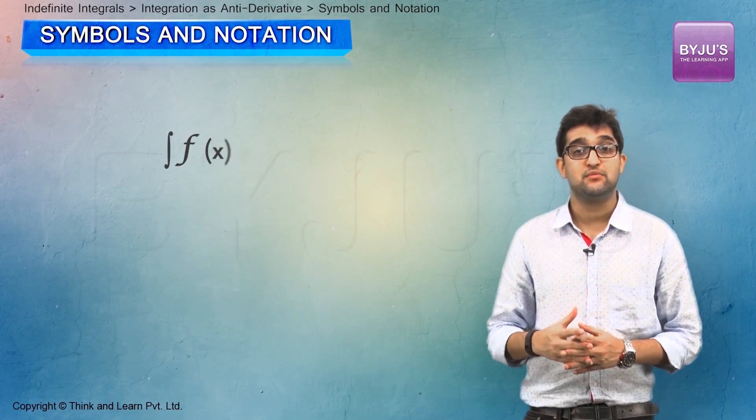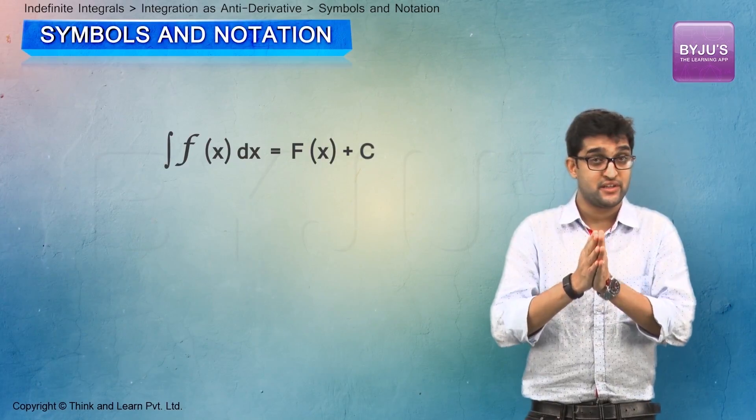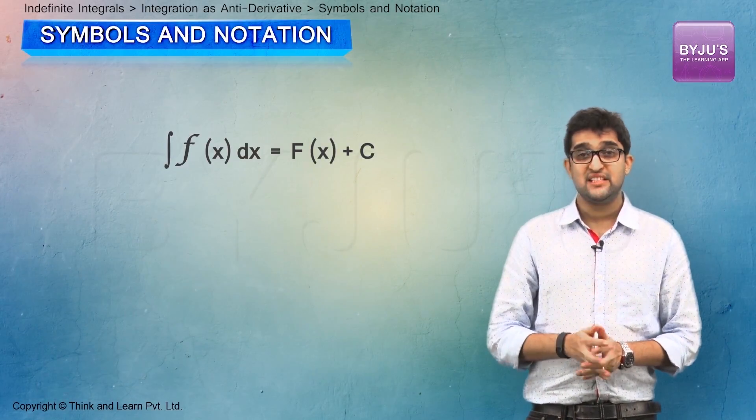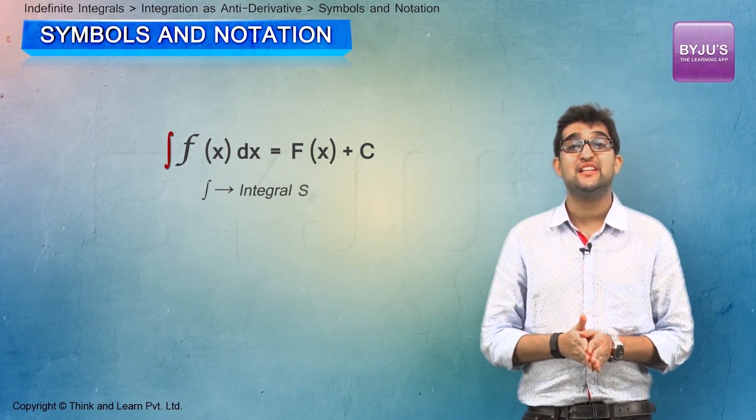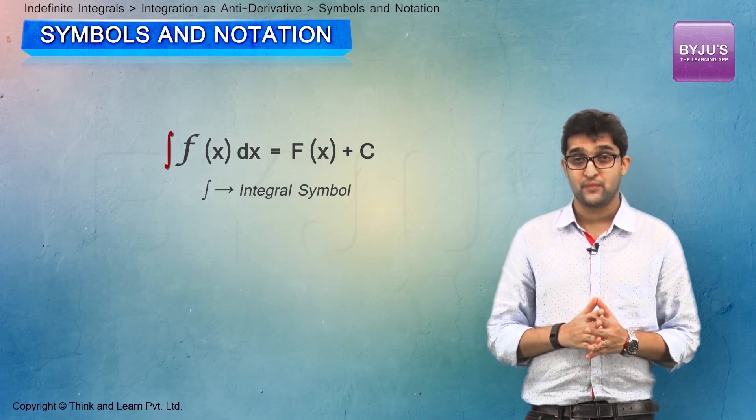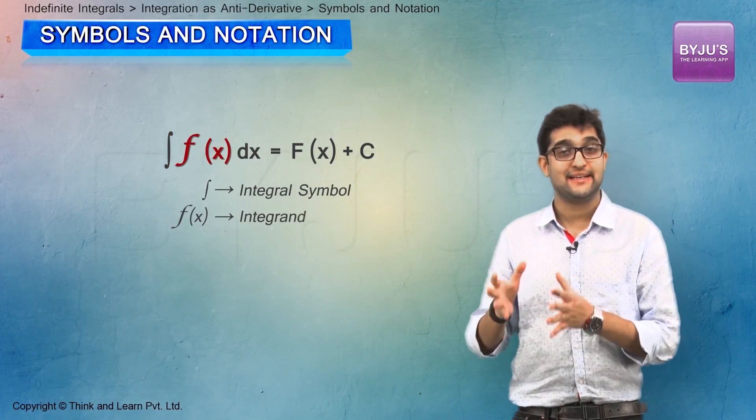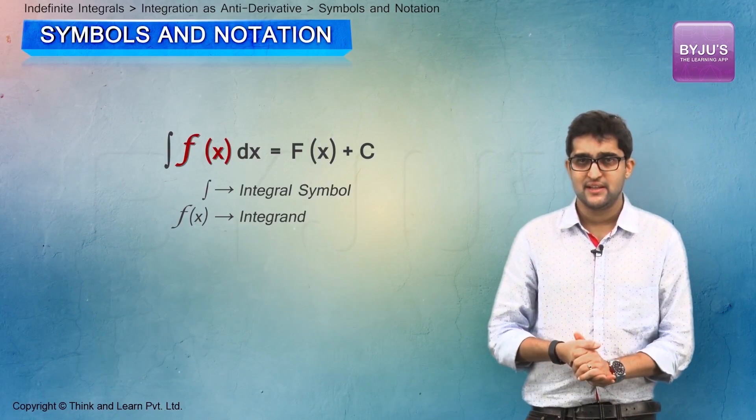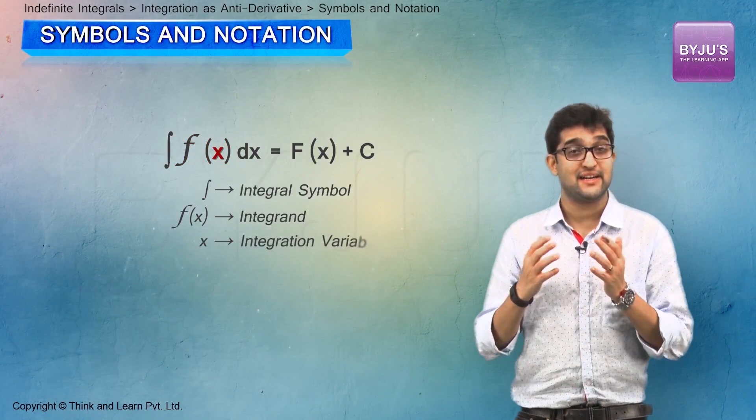This wavy symbol is called the integral symbol. f of x is called the integrand, which is usually a function. x is called the integration variable, and C is called the constant of integration.